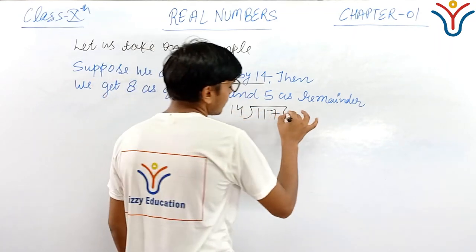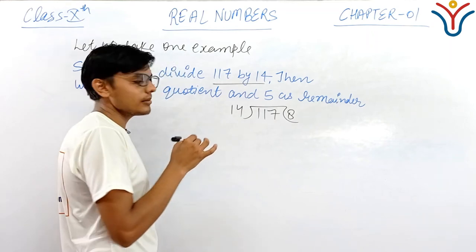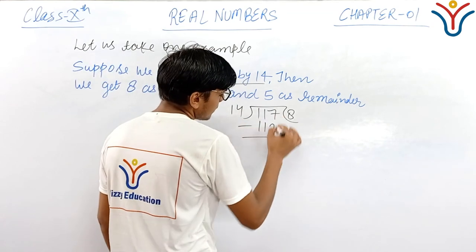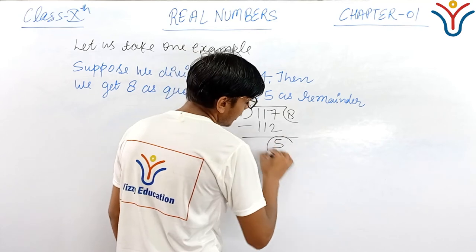First of all, we divide 117 by 14. Then it goes 8 times. 14 times 8 is 112. 117 minus 112 is 5. 5 is the remainder.